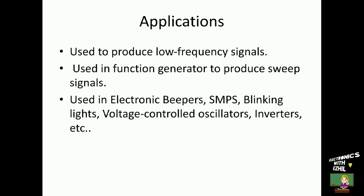UJT relaxation oscillators are used to produce low-frequency signals. They are used in function generators to produce sweep signals. They are also used in electronic beepers, SMPS, blinking lights, voltage-controlled oscillators, and inverters.